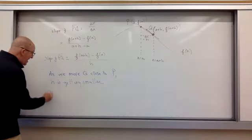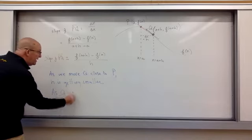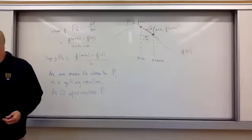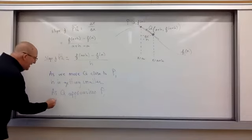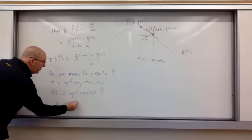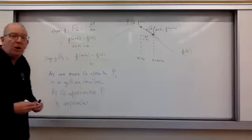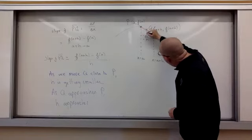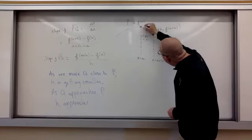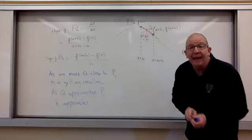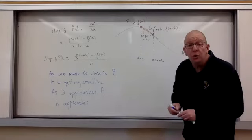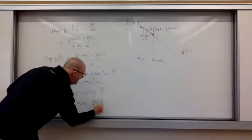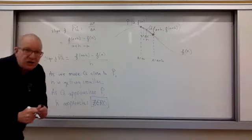One more statement. As Q approaches P, what does this sound like? What mathematical concept uses that word? The limit. As Q approaches P, H approaches what? Think about that for just a minute. What does H approach as Q approaches P? Q is going along here. So that means if it moves up here, H is this distance. And then Q goes up here and H is that little distance. What is happening to H? It's getting smaller and it's getting closer to zero. That's right. Zero.